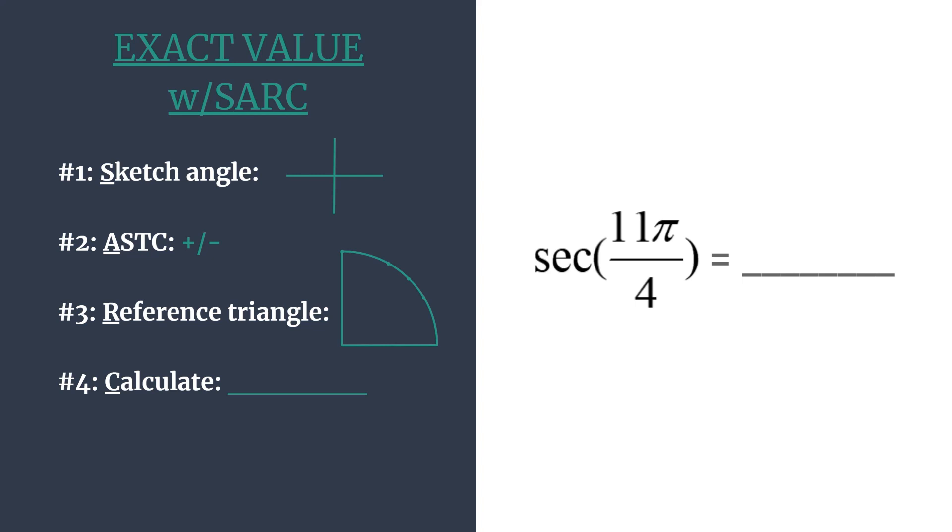To start out, we want to sketch our angle's terminal side, and we're going to make one tweak to our angle to help us better sketch, and that's to find a coterminal angle.